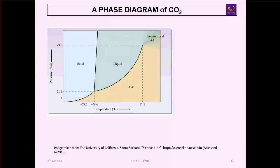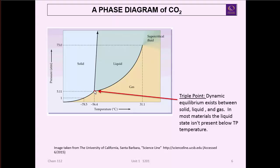Now there's some other points on the phase diagram that are important to talk about. One of them is right here where the three lines - the solid-gas line, the solid-liquid line, and the liquid-gas line - all converge. This is called the triple point. In the triple point, dynamic equilibrium exists between solid, liquid, and gas. Most materials which have a right sloping solid-liquid line - there is no liquid state achievable at temperatures below the triple point.